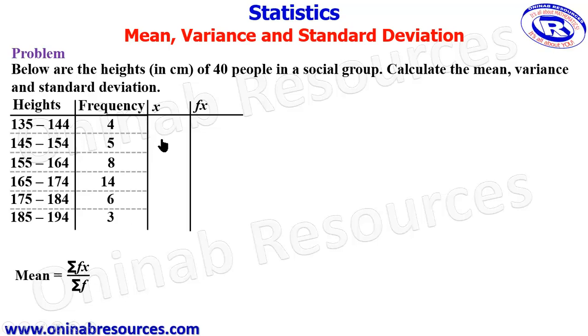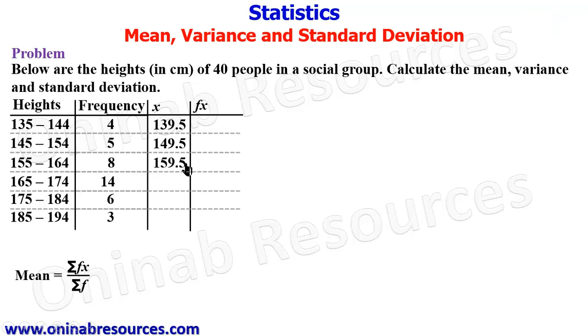Then we get our x. X is the mid value of the lower limit and the upper limit. So we add 135 to 144, divide by 2, we have 139.5. The same way, 145 plus 154 divide by 2, we have 149.5. 155 plus 164 divided by 2 gives 159.5. 165 to 174 divided by 2 gives 169.5. 175 plus 184 divided by 2 gives 179.5.